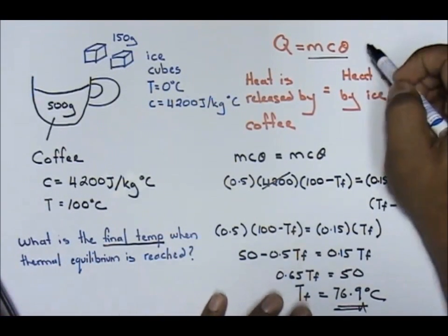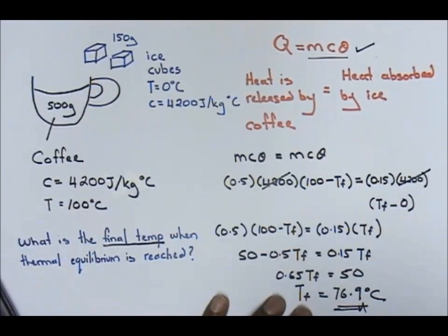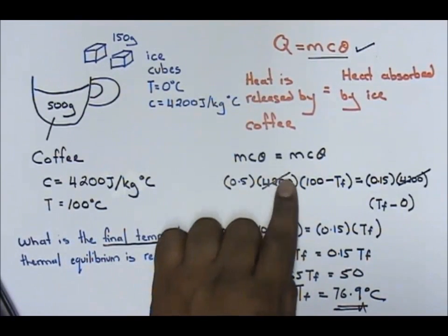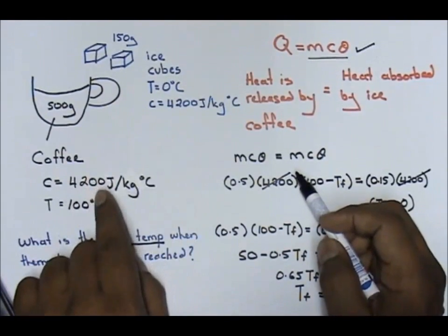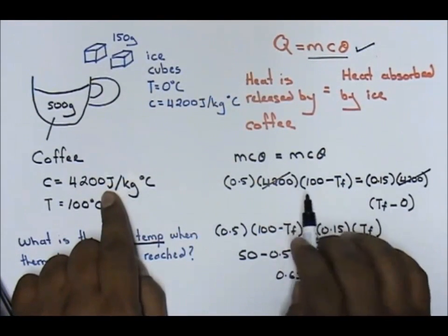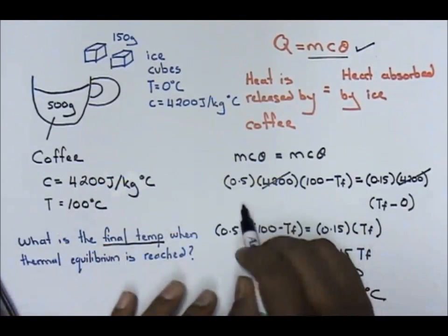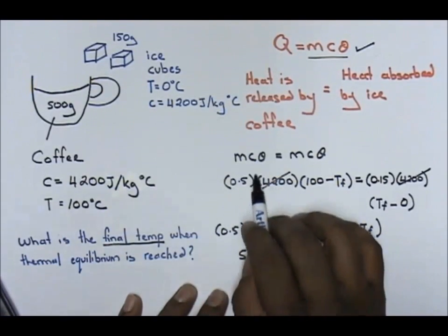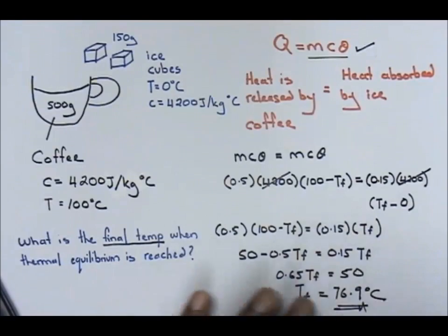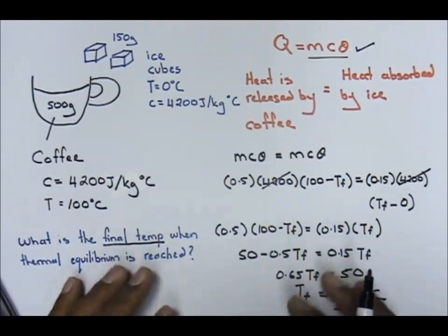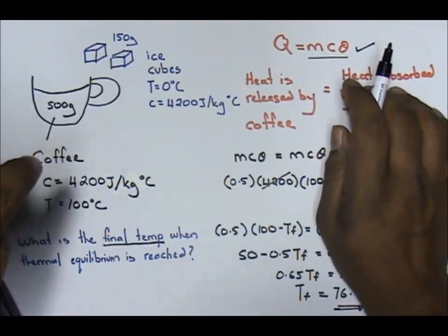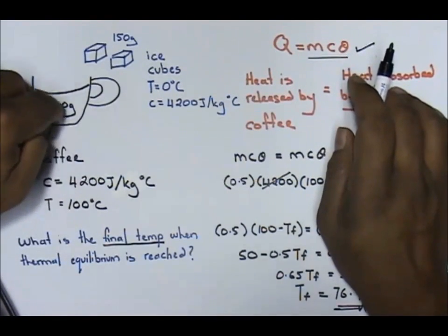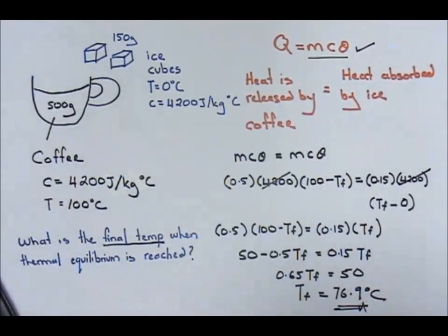This is how you answer a question using Q equals MC theta. Do note the calculation is a little easier here because both specific heat capacities are the same value. If they are not the same value, it is purely mathematics — you have to multiply inside and work through both sides. For now, this is a simple example. Please remember: heat released by the coffee equals the heat absorbed by the ice.